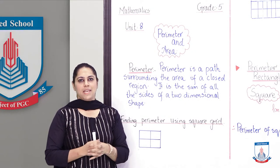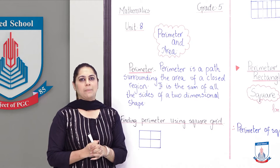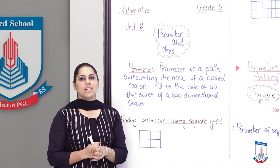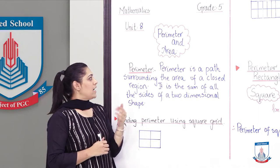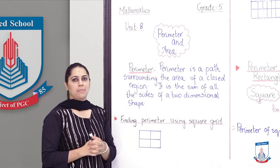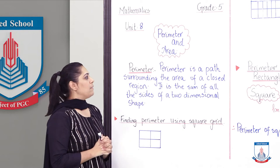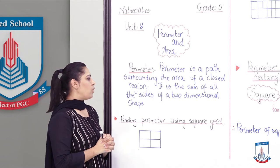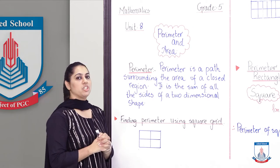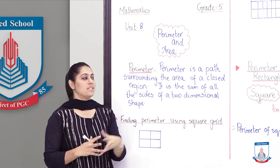Students, as you can see our topic is perimeter and area. Today we will discuss this lecture only about perimeter. Let's look at the definition of what is perimeter. Perimeter is a path surrounding the area of a closed region. It is the sum of all sides of two dimensional shape.